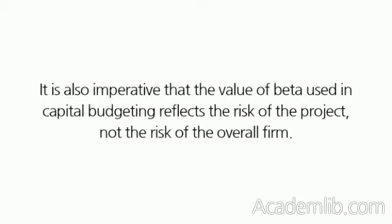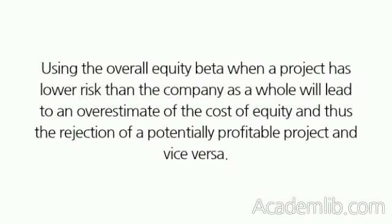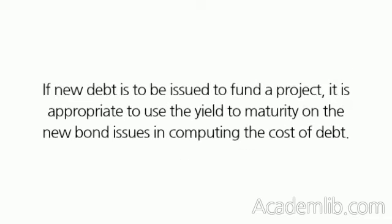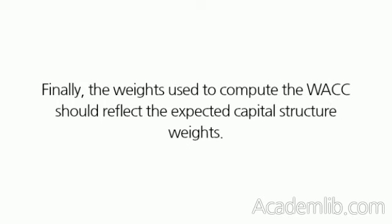It is also imperative that the value of beta used in capital budgeting reflects the risk of the project, not the risk of the overall firm. Using the overall equity beta when a project has lower risk than the company as a whole will lead to an overestimate of the cost of equity and thus the rejection of a potentially profitable project, and vice versa. If new debt is to be issued to fund a project, it is appropriate to use the yield to maturity on the new bond issues in computing the cost of debt. Finally, the weights used to compute the WACC should reflect the expected capital structure weights.